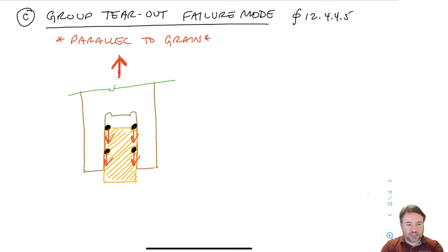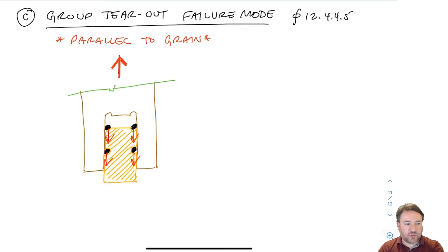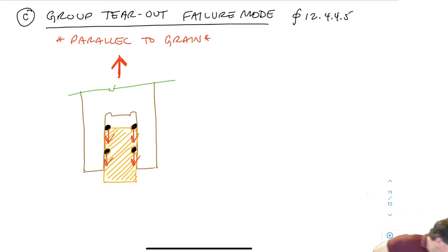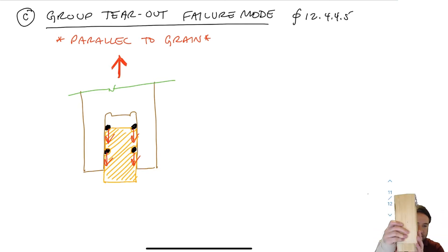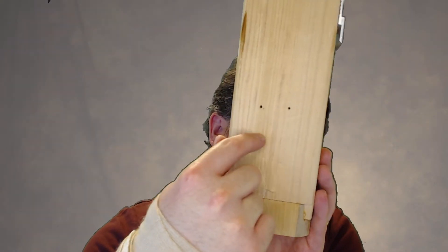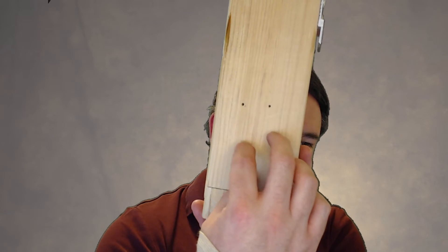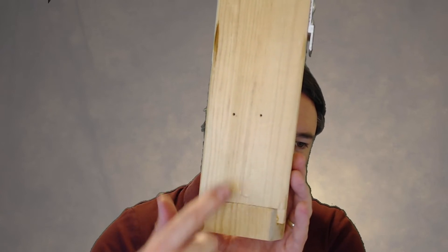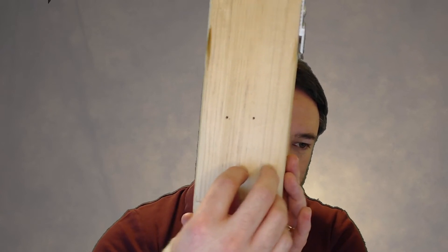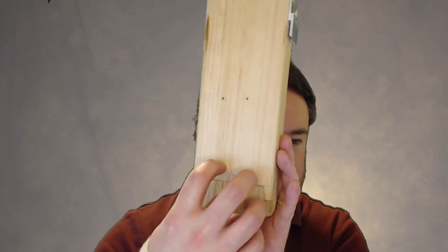This is something that if you've done steel design will also be familiar to you, because in steel design we design for these group tear out failure modes. You can imagine that row shear is pretty easy to visualize — if I pull on a piece of wood that has a group of bolts, say bolts here, here, here, and here, then instead of pulling out two strips of wood, you could pull out a whole chunk of the piece of wood.